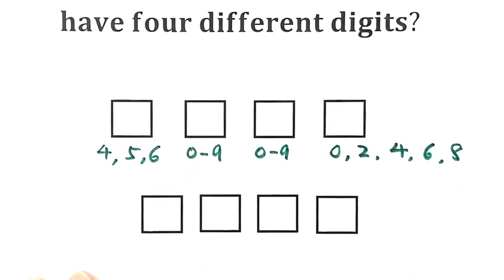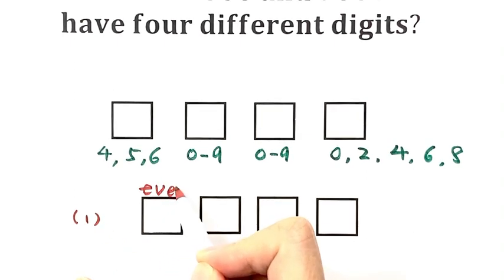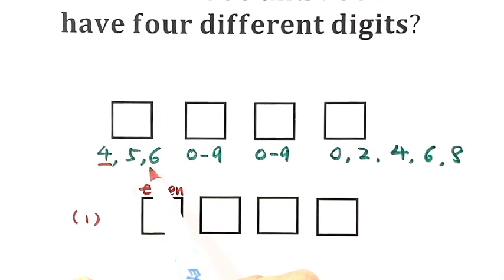First case: the thousandth digit is even. Then there are two possibilities, 4 or 6. That means two options, represented by 2 choose 1.